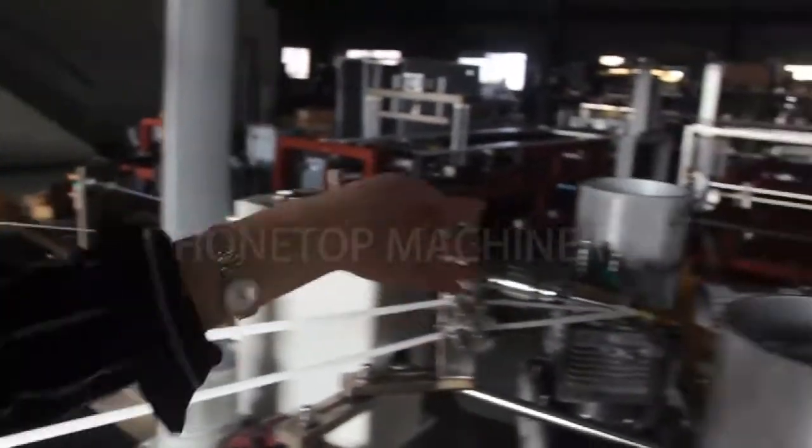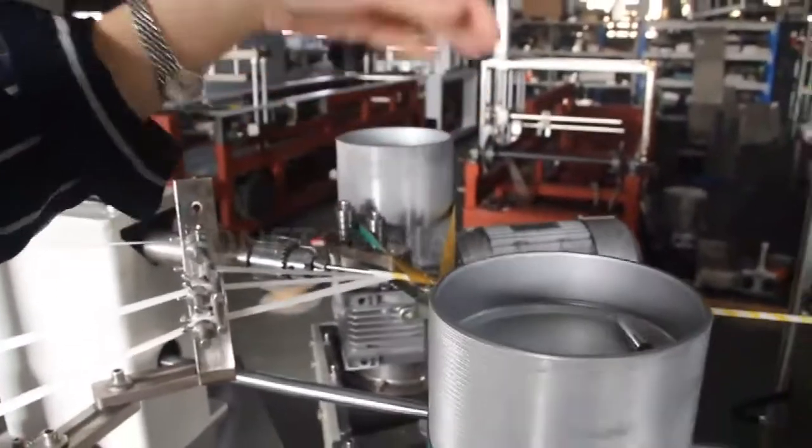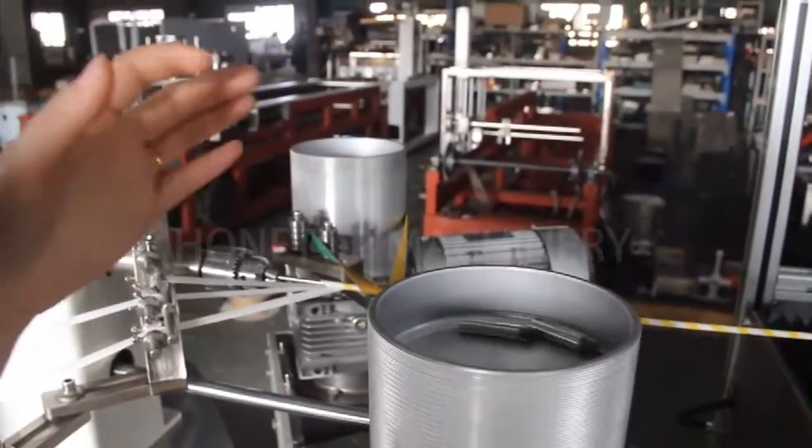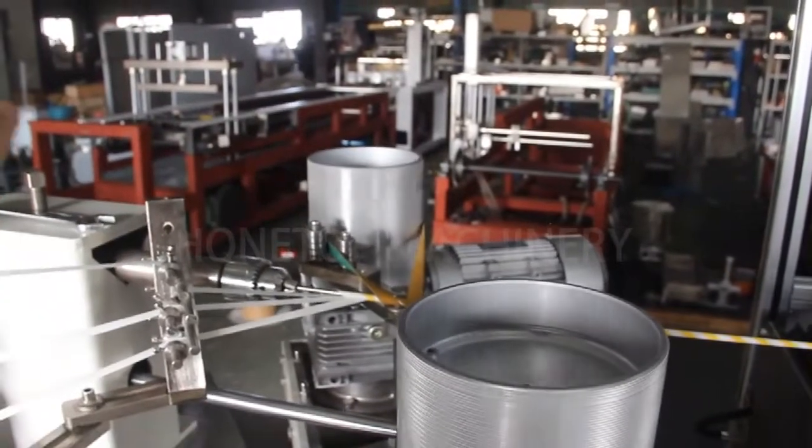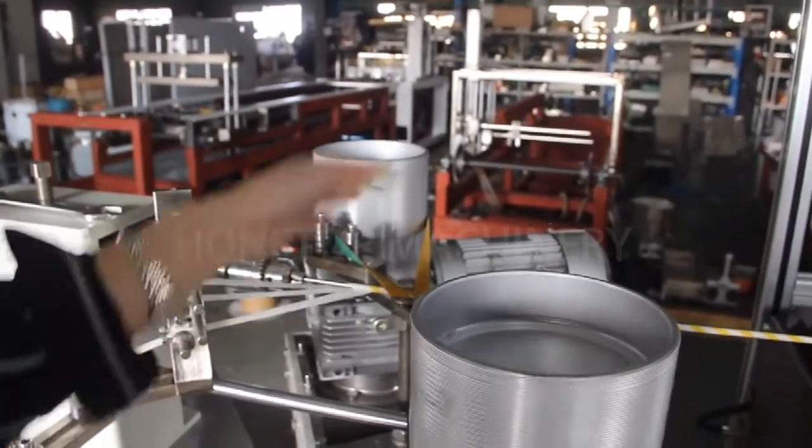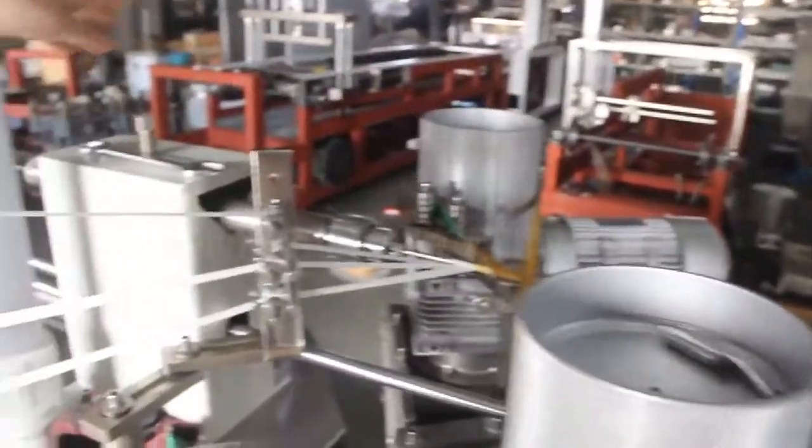This forming unit is for the paper. You can make different diameter paper straws. For example, diameter 6, diameter 10, diameter 12, and diameter 8. You change the mold here. And also for the belt, we will give you spare parts for the belt. And also for the cutting.